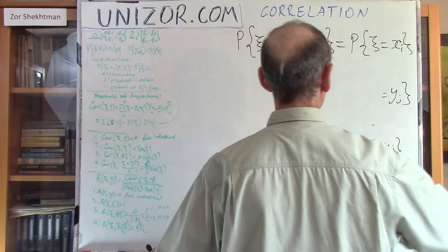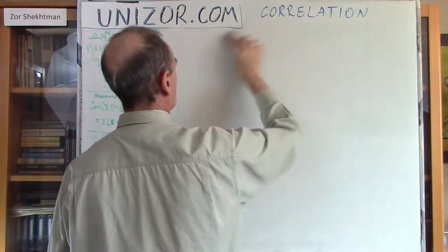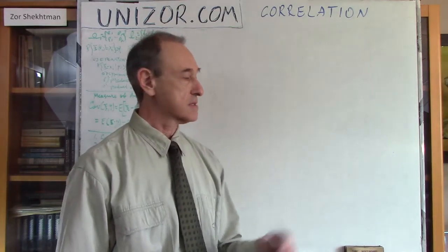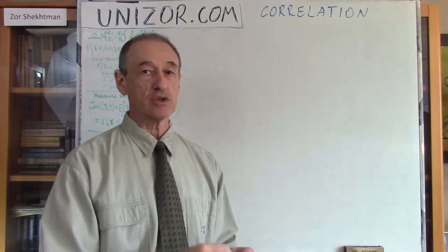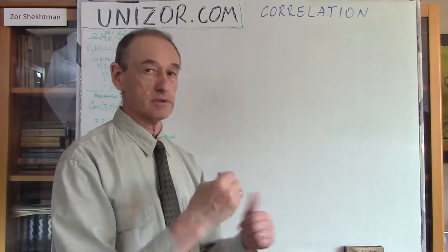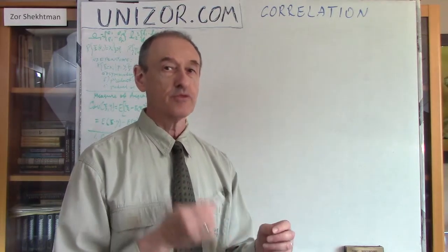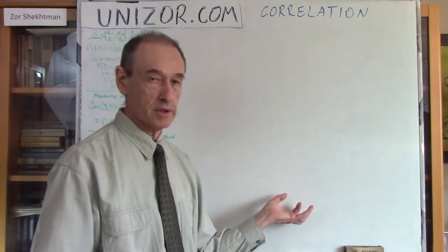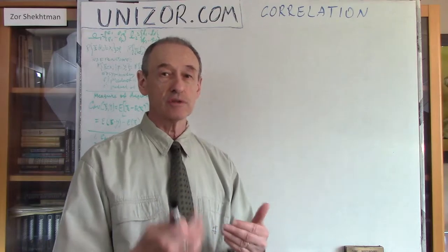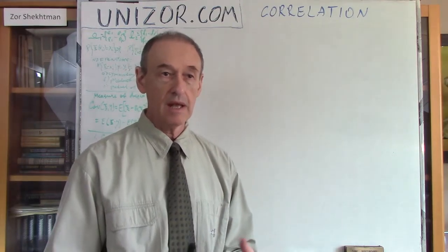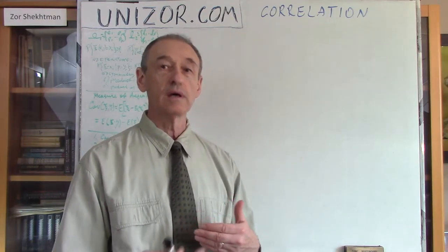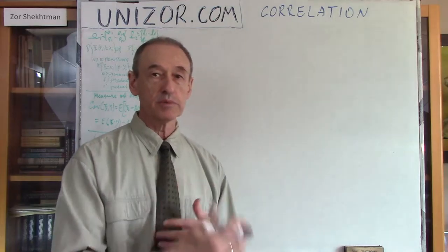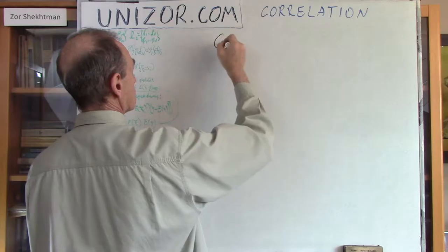Now I would like to talk about dependent variables. The key property I just mentioned — that the mathematical expectation of the product of two random variables equals the product of their mathematical expectations — is actually the base for measuring the dependency between them. If there is a difference between the expectation of the product and the product of expectations, this difference signifies a certain degree of dependency. The greater this difference, the greater the dependency we assume between these random variables.